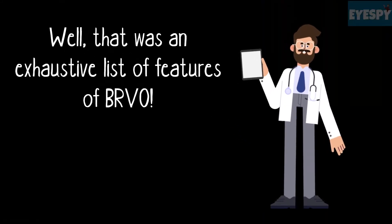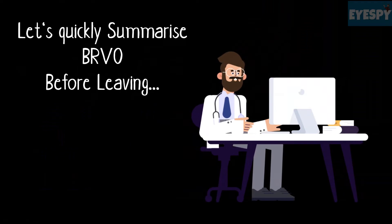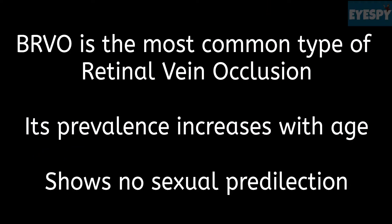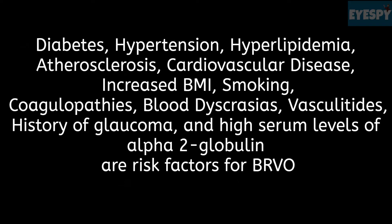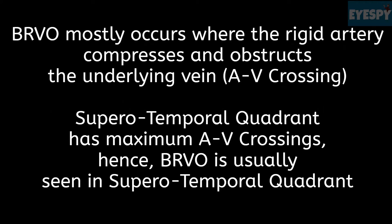BRVO is the most common type of retinal vein occlusion, whose prevalence increases with age. Diabetes, hypertension, hyperlipidemia, and atherosclerosis are various risk factors. Compression of the vein by the rigid artery leads to thrombosis and occlusion. BRVO is most commonly seen in the superior temporal quadrant.